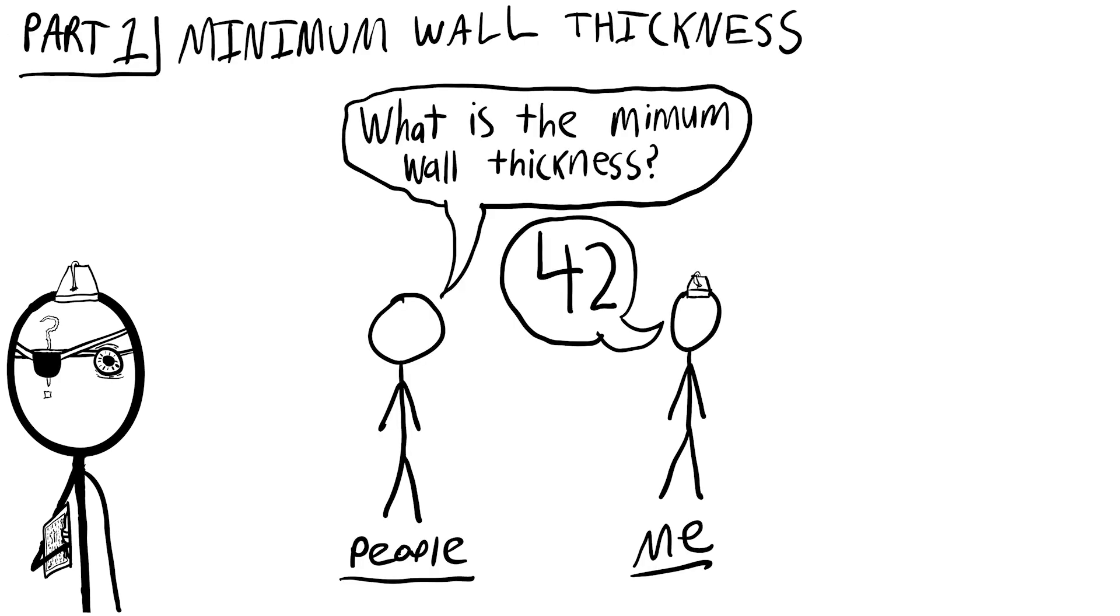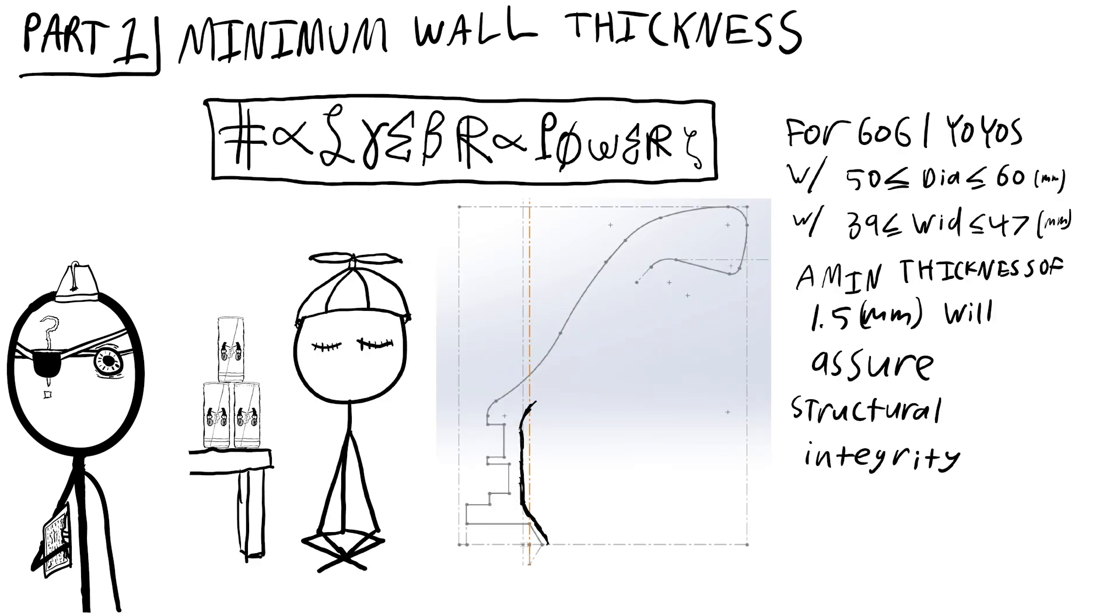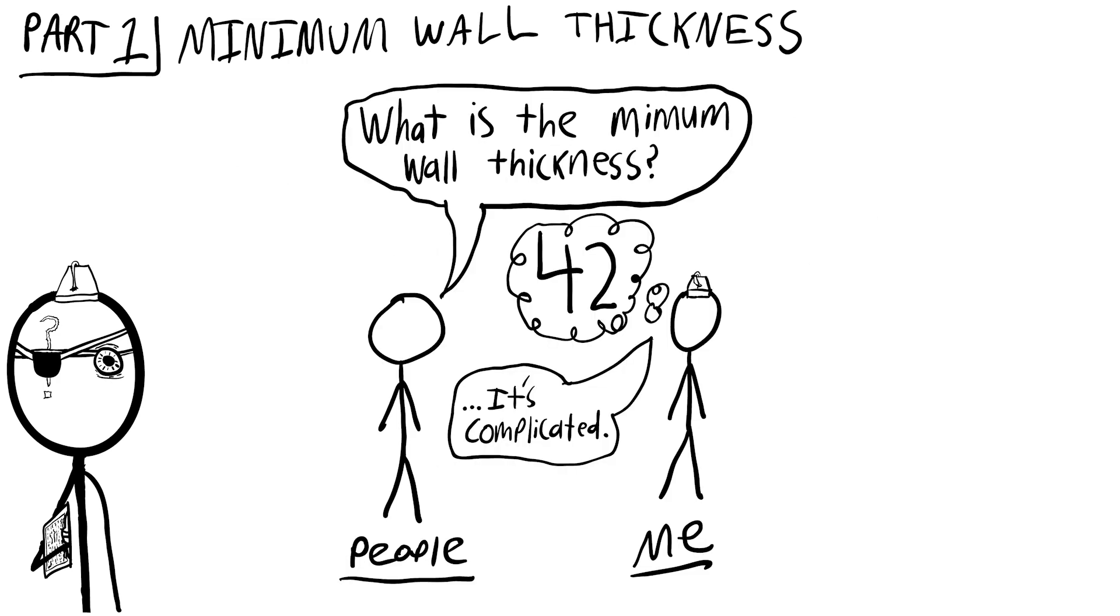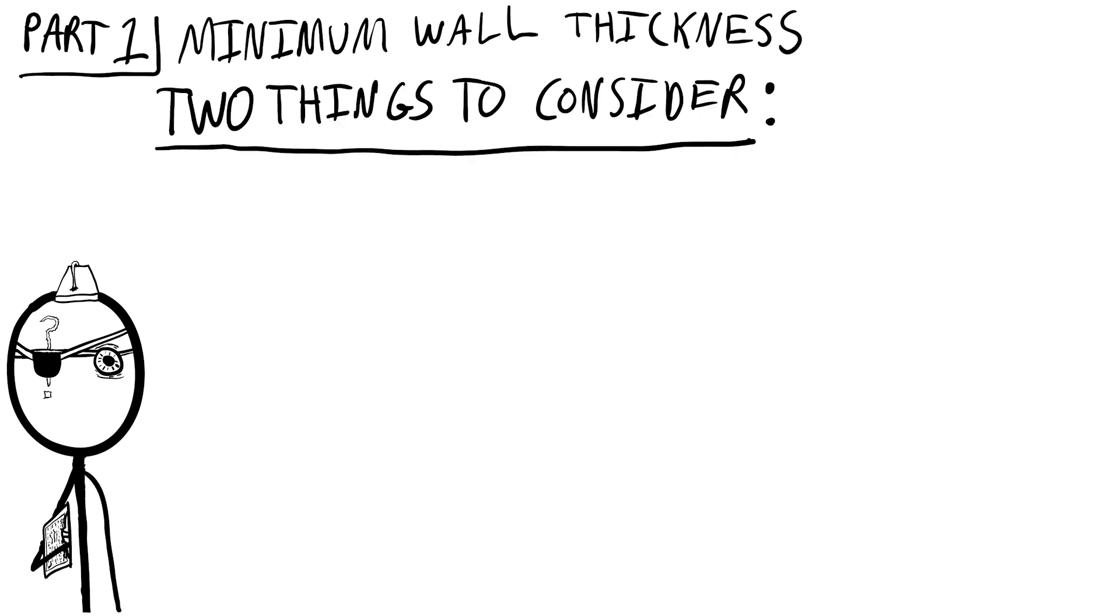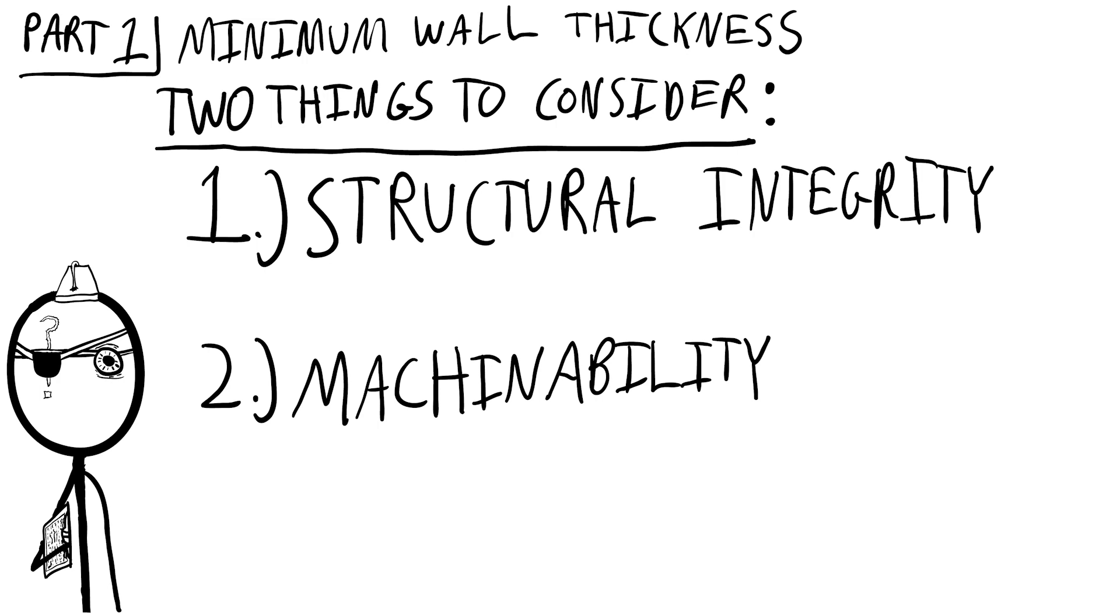Part one, what is the minimum wall thickness, is a question that I see asked very frequently, and I even touched on it with an easy rule of thumb for specific 6061 aluminum yoyos in an earlier video. But this simple and straightforward answer is not the full story for 6061 or for any other material yoyo. There are two factors that must be taken into account when selecting a minimum wall thickness limit for your yoyo: structural integrity and machinability.